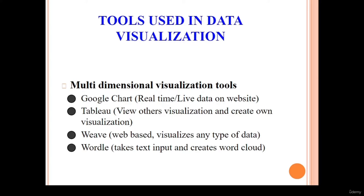The next one is Tableau. There are various versions of Tableau available and there is also a free version called Tableau Public, which we will discuss in the course. This tool can be used when we want to view visualizations created by somebody else and also create our own visualizations. Then the next one is Weave, which stands for web-based visualization. It deals with web-based visualization where data might be available in any type of format: structured, semi-structured, quasi-structured, or completely unstructured.